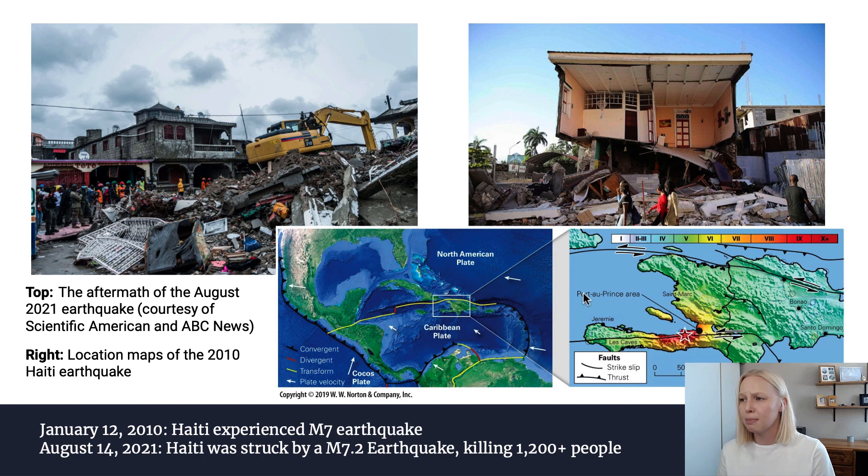If we look at this map on the right, we can see Haiti again and the location of that 2010 earthquake and it's right along this strike-slip fault, a fault where two plates are sliding past one another. And the magnitude 7.2 earthquake that occurred just a couple of weeks ago was also along the same fault. So Haiti is right in a place where we would expect these earthquakes, unfortunately, to occur on a pretty regular basis. And the seismic hazard there is really, really high.